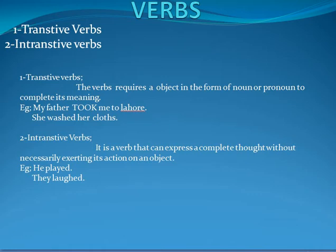So let's first look at Transitive verbs. Transitive verbs are verbs that require an object in the form of a noun or pronoun to complete their meaning. Transitive verbs وہ verbs ہوتے ہیں جن کو explain کرتے ہوئے ہمیں object کی ضرورت ہوتی ہے۔ For example: 'My father took me to Lahore.' Here the word 'took' is your verb, and it is a Transitive verb.